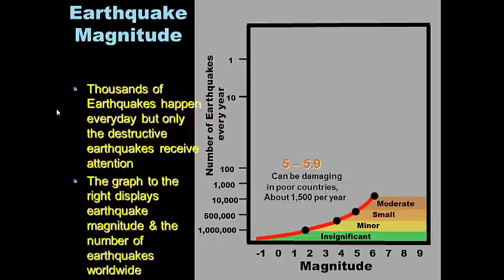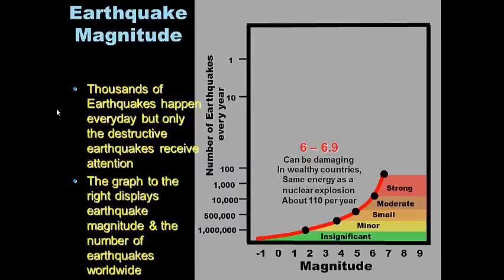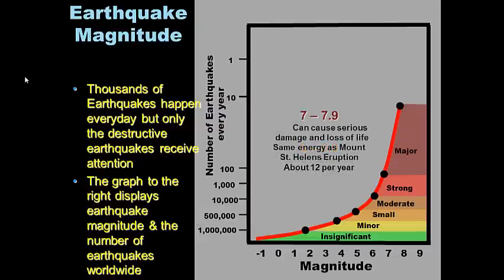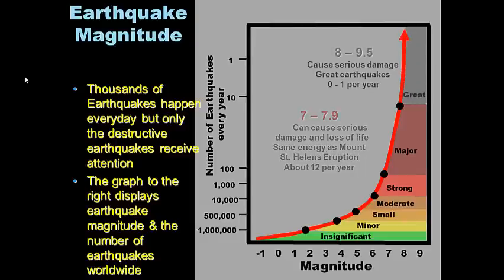Magnitude 5–5.9 can be damaging in poor countries with poor buildings — about 1,500 per year. Magnitude 6–6.9 strong earthquakes can be damaging even in wealthy countries if they hit a city — same energy as a nuclear explosion, about 110 per year. Magnitude 7–7.9 can cause serious damage and loss of life — same energy as Mount St. Helens' eruption, about 12 per year.